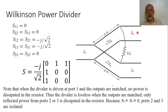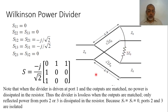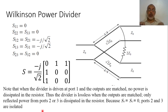The divider is lossless when the output ports are matched, and only reflections from ports two and three are dissipated in the resistance. Because S23 and S32 are zero, ports two and three are completely isolated, which is a very important advantage compared with conventional T-junction power dividers.